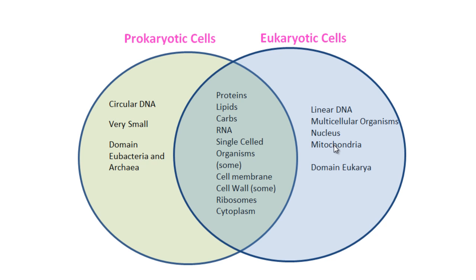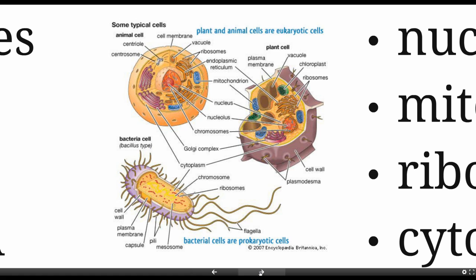A nucleus and mitochondria are both membrane-bound, and this is what defines eukaryotic cells, so they're only found there. The domain Eukarya is made up of eukaryotic cells, and the domains Eubacteria and Archaea are made up of prokaryotic cells. Here's a picture of typical prokaryotic and eukaryotic cells — we have an animal and a plant cell, each with a nucleus and membrane-bound organelles. Prokaryotic bacterial cells are much simpler internally; they have a cell membrane with a cell wall outside, and their DNA appears as a single loop, with ribosomes floating in the cytoplasm.